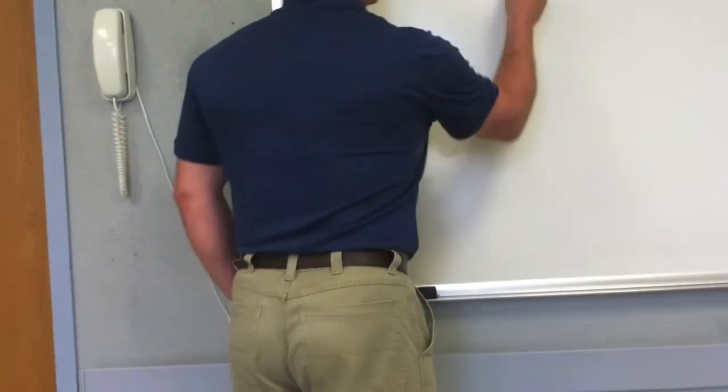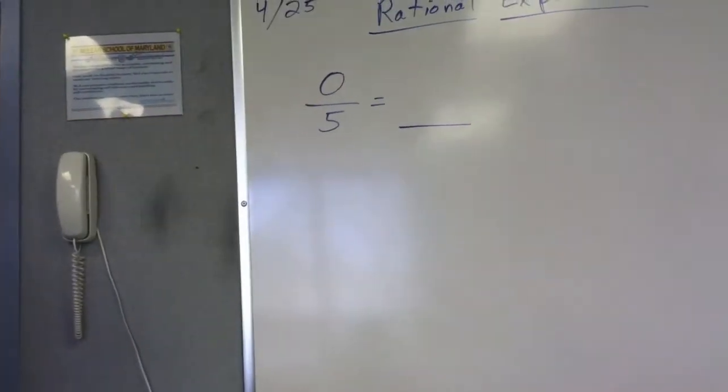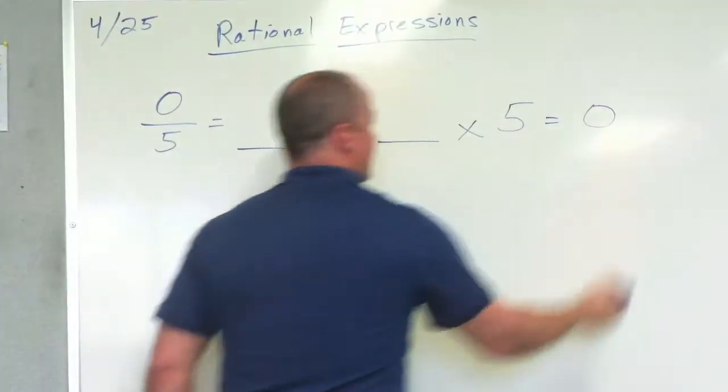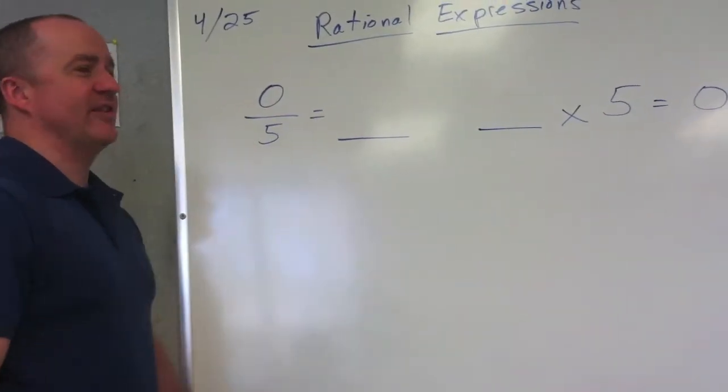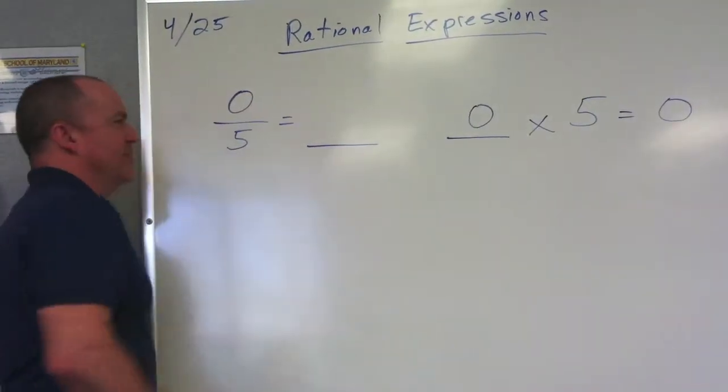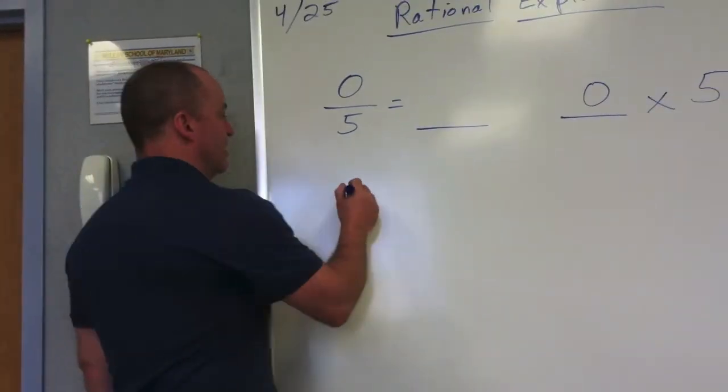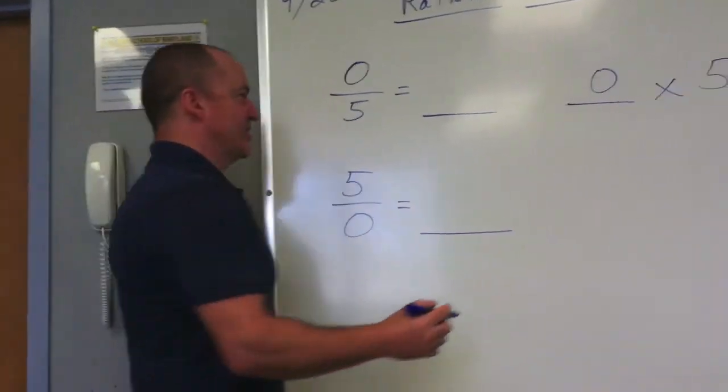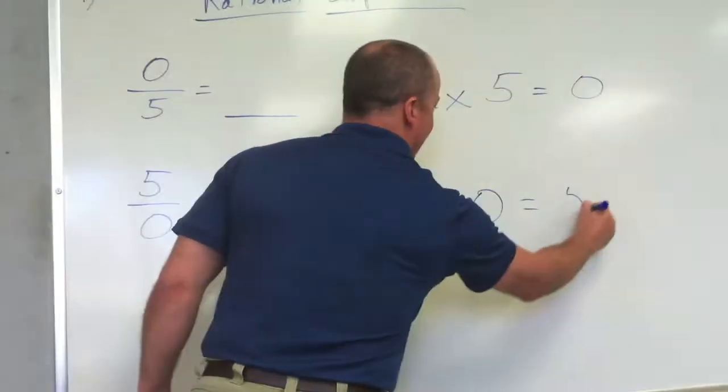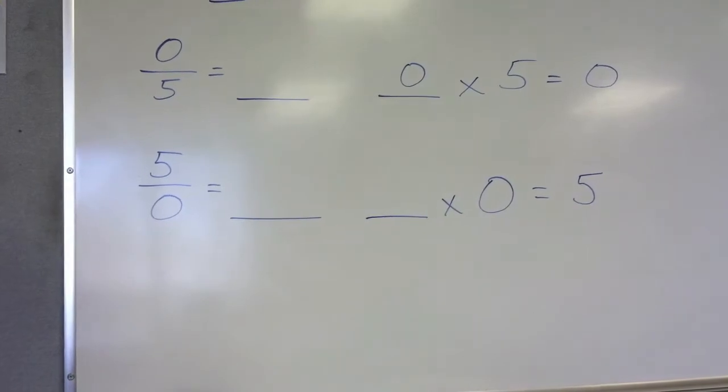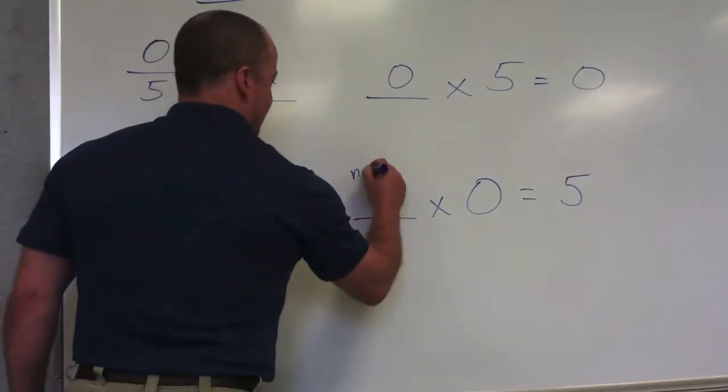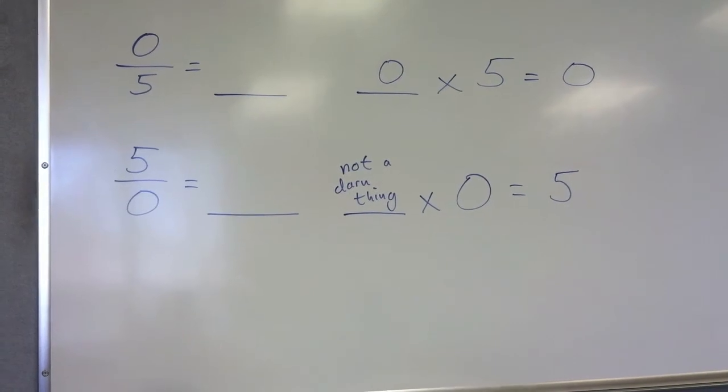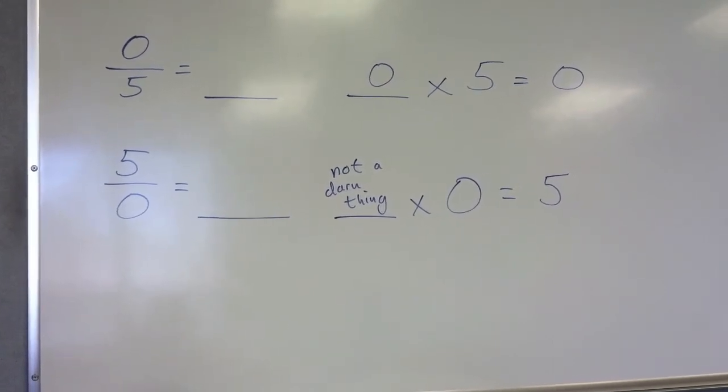Is 0 over 5 problematic? No. Now, rewrite this as a multiplication problem, and I have blank times 5 equals 0, correct? And what times 5 gets you 0? Zero. So 0 on top, if 0 is only on top, is never a problem. Is 5 over 0 equals blank a problem? Yes. Because I rewrite this as blank times 0 equals 5, and what times... It's undefined, right? Yeah, it's undefined. We cannot define anything that we can multiply by 0 and get 5, so we say it's undefined. We can't reverse the operation.